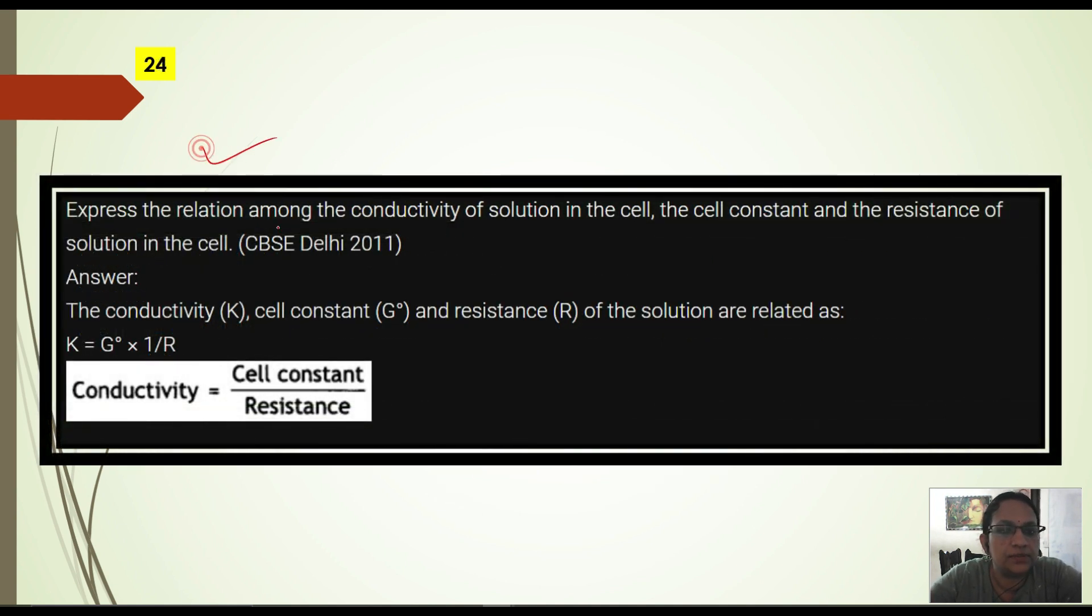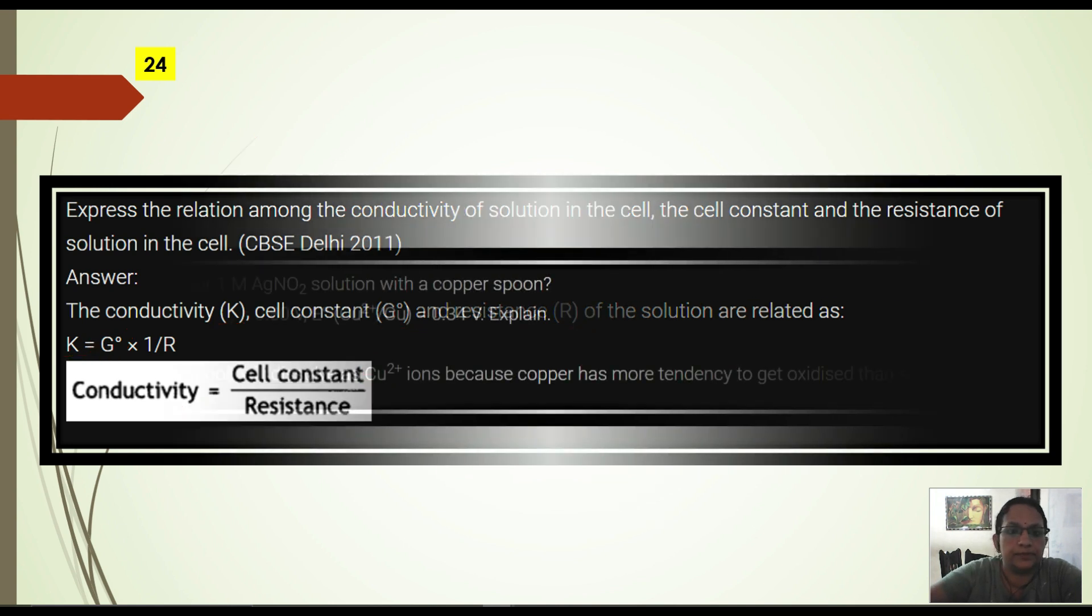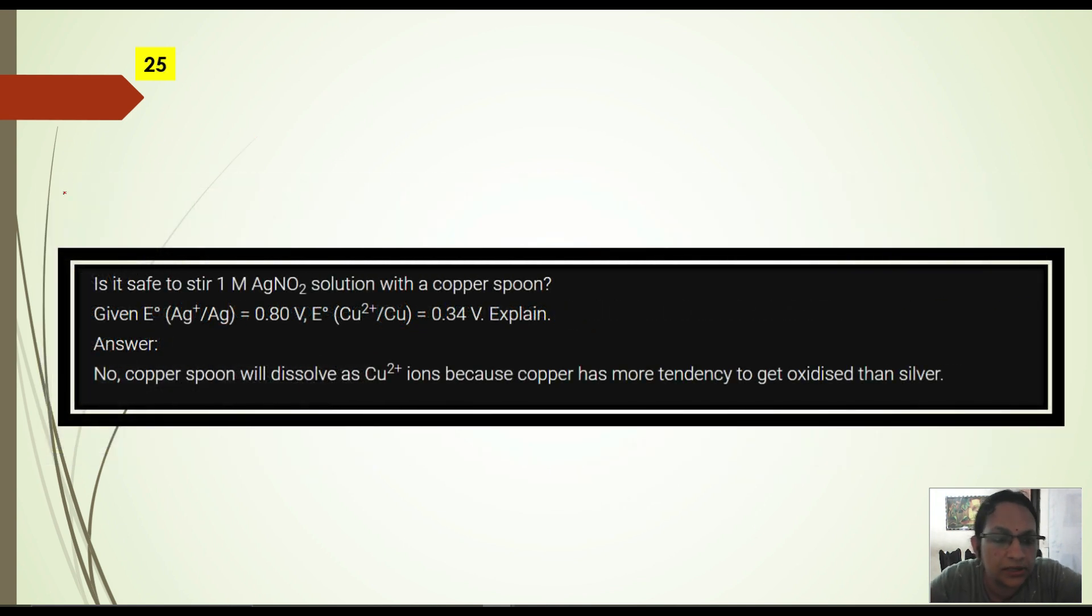Next question. Express the relation among conductivity of a solution in a cell, cell constant and resistance. So you see K is equal to g times 1 by R. K is conductivity, g is cell constant, and R is resistance. So conductivity is equal to cell constant divided by resistance. This is a small formula for the exam.